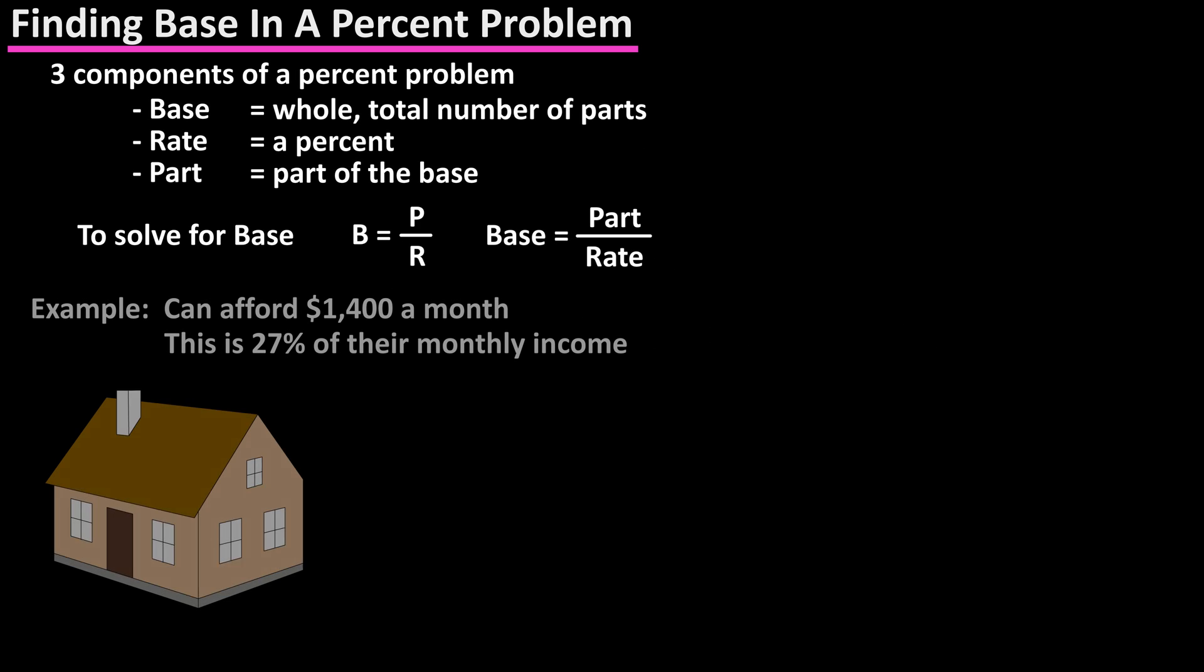As an example, let's say that a couple wants to buy a house. They figure that they can afford a $1,400 a month mortgage payment, which is 27% of their monthly income. So what is their monthly income?